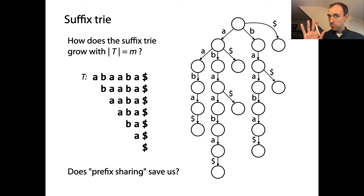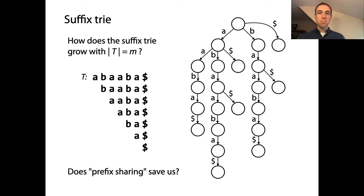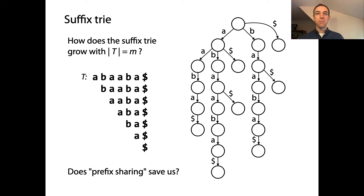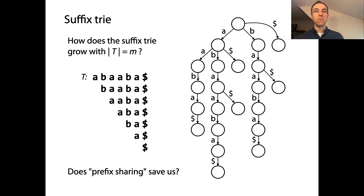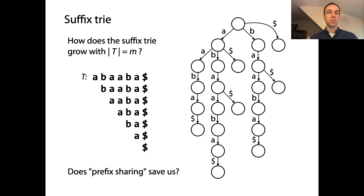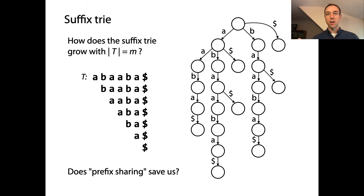So we're going to do a few examples of families of strings that have different growth properties, so that we can get to know: is it possible to define a family that has linear growth? Is it possible to define a simple family that has quadratic growth? And then we'll see some empirical results at the end.